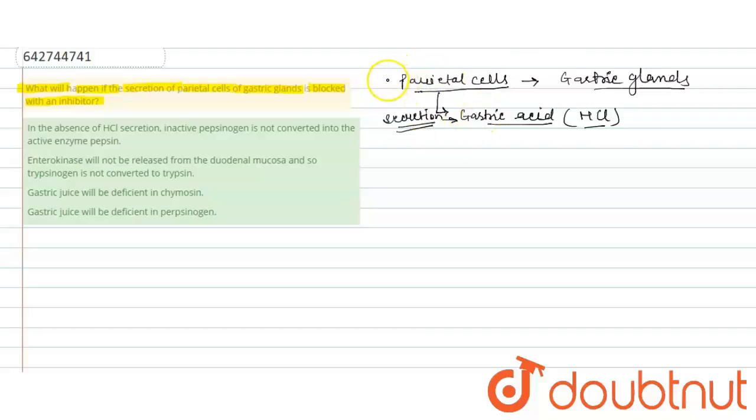Because this HCl is helpful for the conversion of pepsinogen into pepsin. Pepsinogen is an inactive form of enzyme.